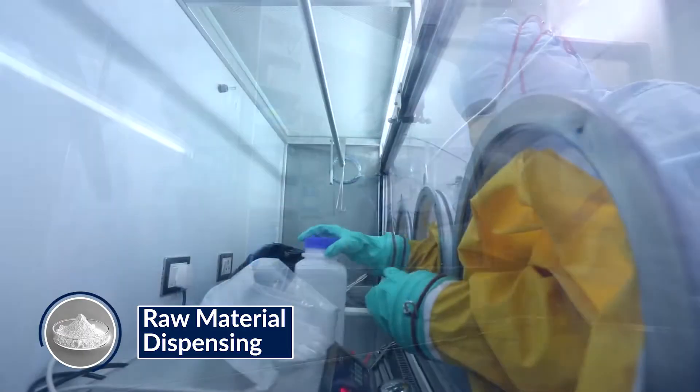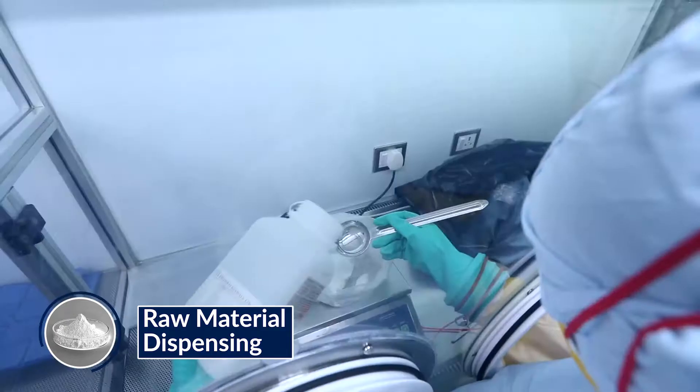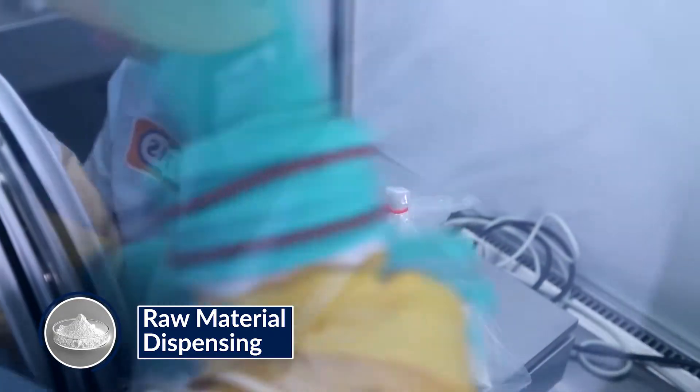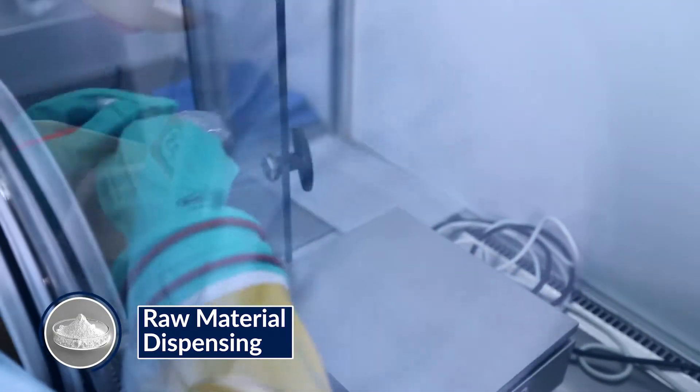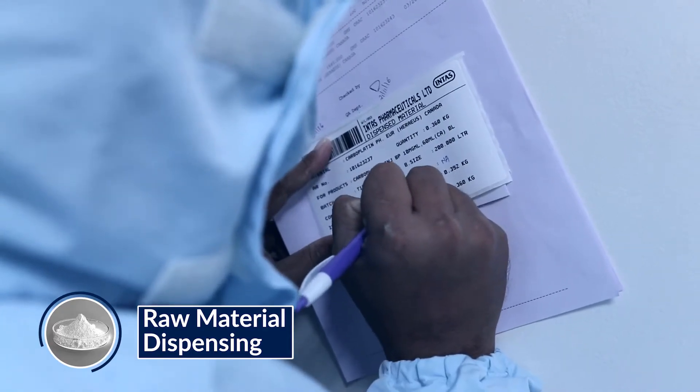Raw material sampling is done in a micro environment. After QC approval on sample, the material is passed through air showers and a vacuum chamber for cleaning. The selected samples are barcode fitted to ensure the correct sample is processed.